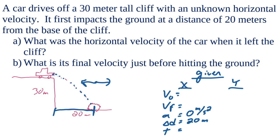In the y direction, notice the problem says the car is moving horizontally, so when it leaves the cliff there is no vertical velocity — only horizontal velocity. So the initial vertical velocity is zero meters per second. The final velocity is not when it impacts the ground but right before it hits, and we do not know that value.